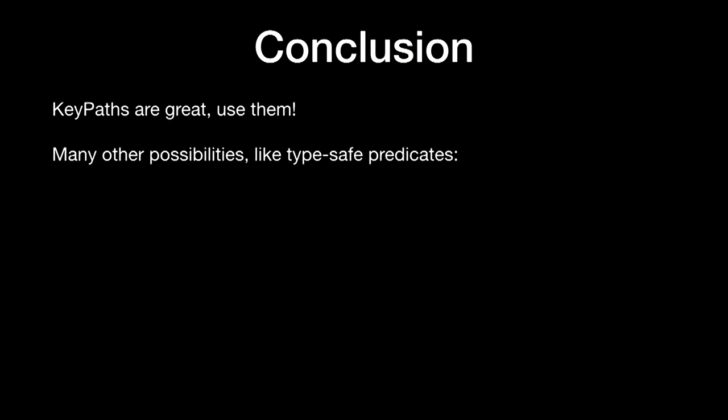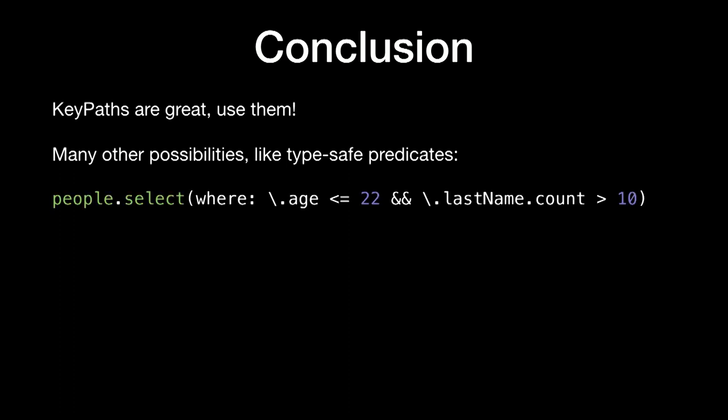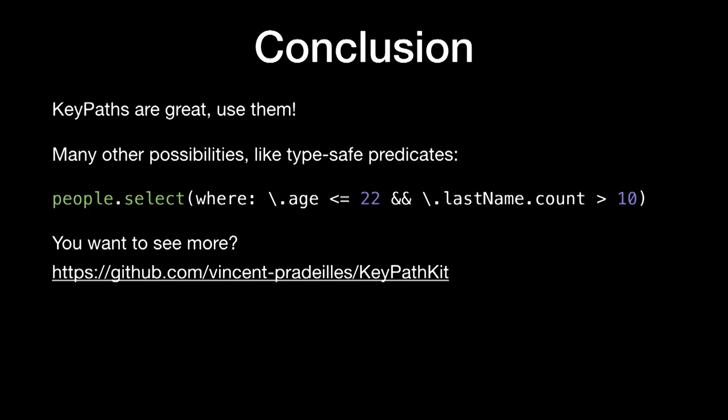This is a lightning talk, so this is the end. I've only been able to show you the tip of the iceberg, but I want you to take away that KeyPaths are great — they are underused, but you should use them. There are many other possibilities. For instance, with KeyPaths you can build type-safe predicates that perform the same job as NSPredicates but with a type-safe approach. If you're interested in seeing more, I've left a link to a GitHub repository where you can see how to implement a predicate system and lots of other cool stuff with KeyPaths.